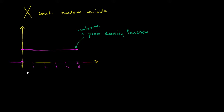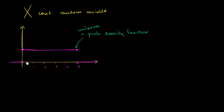For a discrete random variable we sum up the bars. For a continuous random variable, we have to realize it can take on any value, not just 1, 2, or 3. It could take on 3.14159..., the value of pi, 2.71..., the number e, the square root of 2, or any number in between. So when thinking about all possible values our random variable can take on times the density, the probability is now the area.